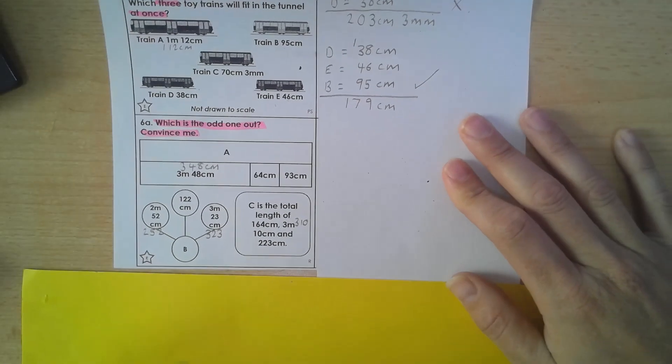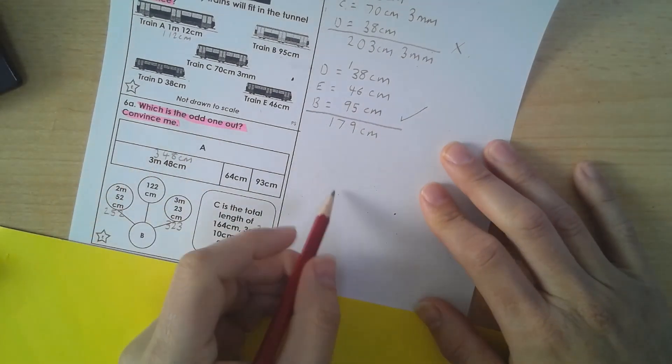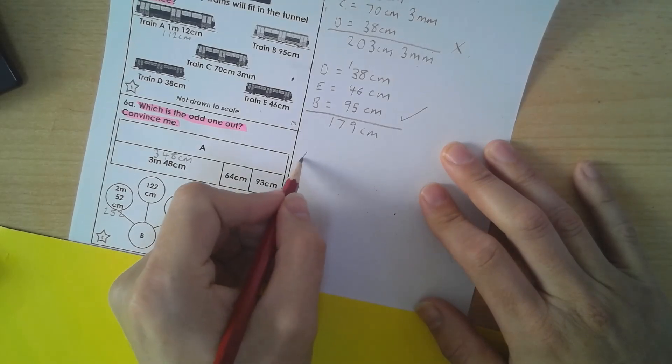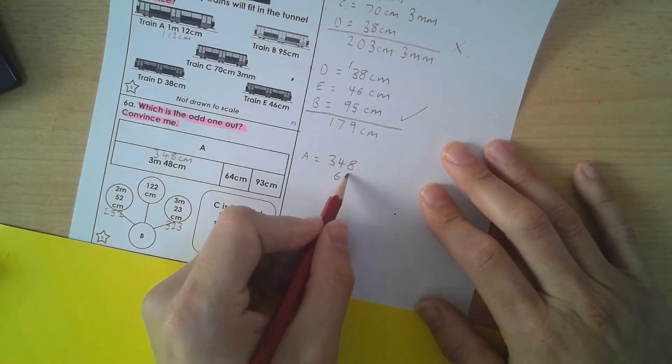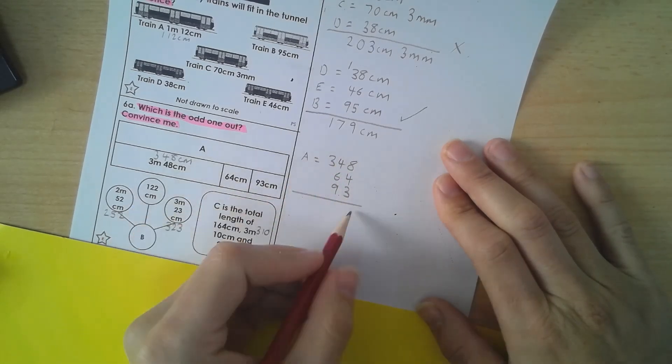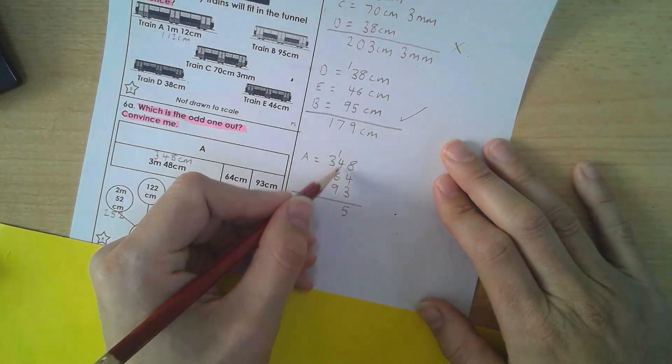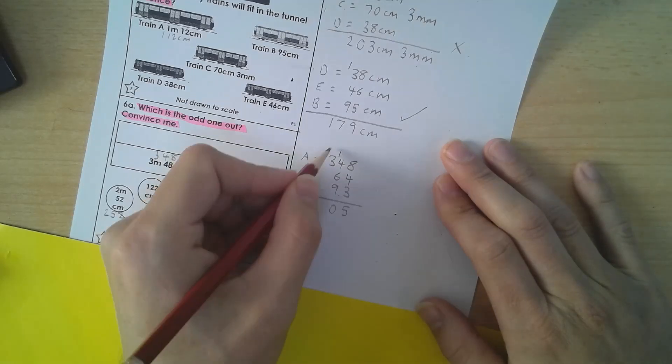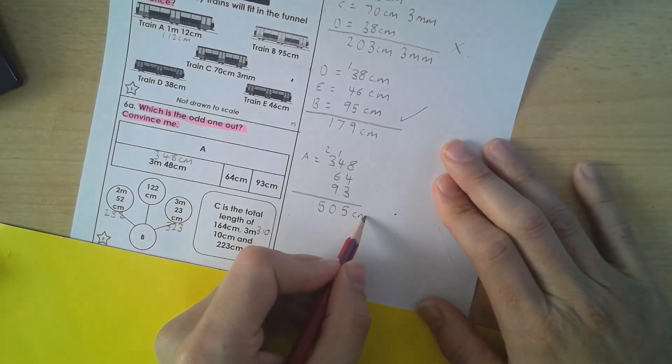And now I'm going to add them up and see which one is the odd one out. So again, I'm just working in, so A equals 34, 64, and 93. So A is 8 and 4, gives me 12, and that one is 15, carry the 1, gives me 5, 5 there, 5 and there to make that number bond, gives me 10, plus 1 more is 11, and then that one gives me 20, and 2 and 3, gives me the 5, so that one is 505 centimetres.